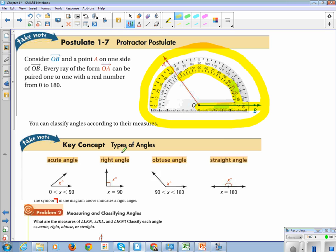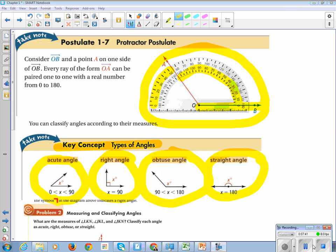Please put this in your notes: types of angles. Acute is less than 90 degrees, right is equal to 90 degrees, obtuse is between 90 and 180, and straight is exactly equal to 180. The symbol—this little square corner symbol in the diagram—indicates a right angle. If it doesn't have a little symbol in the corner, you cannot assume it's a right angle unless the information in the question tells you.